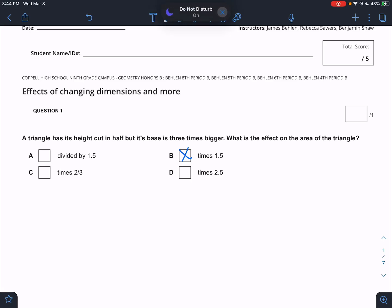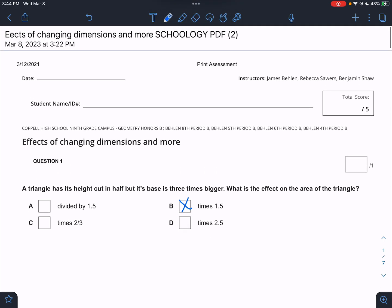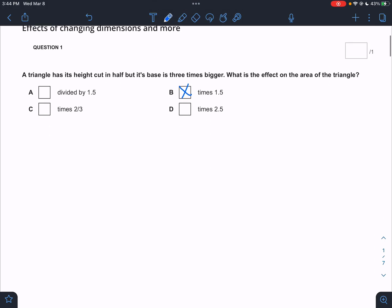All right guys, this is the effects of changing dimensions work through video. We're going to do a good job on this. I got a good feeling. Number one, it says a triangle has its height cut in half.